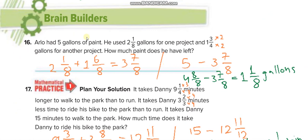Arrow had 5 gallons of paint. He used 2 and 1 over 8 gallons for one project and 1 and 3 over 4 gallons for another. To find how much paint is left, we add both amounts — making denominators the same by multiplying by 2 — then subtract the total from 5. We rename 5 as 4 and 8 over 8, then subtract.